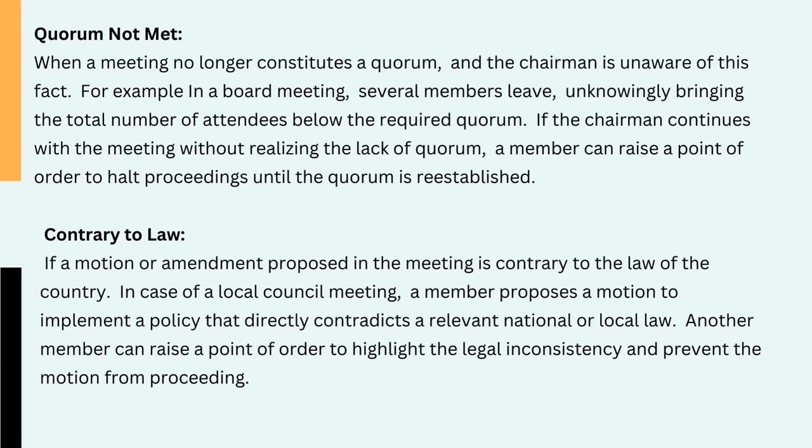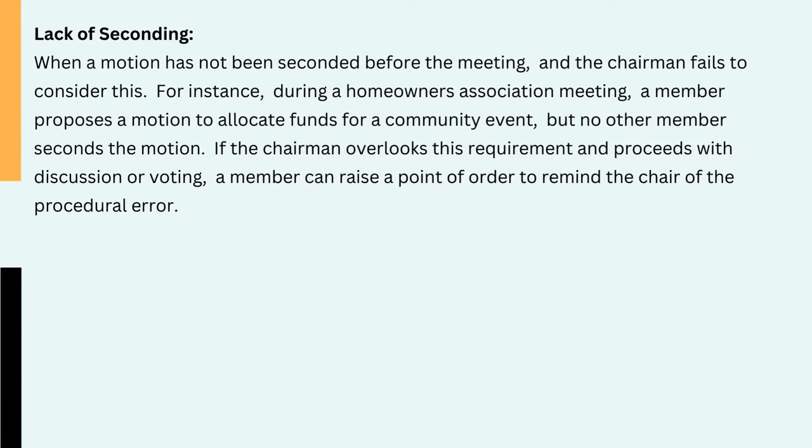3. Contrary to law — if a motion or amendment proposed in the meeting is contrary to the law of the country. In case of a local council meeting, a member proposes a motion to implement a policy that directly contradicts a relevant national or local law. Another member can raise a point of order to highlight the legal inconsistency and prevent the motion from proceeding. 4. Lack of seconding — when a motion has not been seconded before the meeting and the chairman fails to consider this. For instance, during a homeowners association meeting, a member proposes a motion to allocate funds for a community event, but no other member seconds the motion. If the chairman overlooks this requirement and proceeds with discussion or voting, a member can raise a point of order to remind the chair of the procedural error.